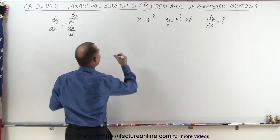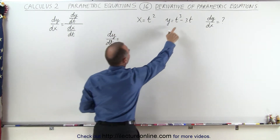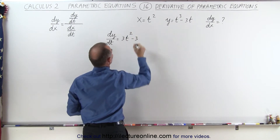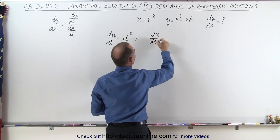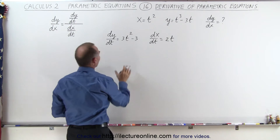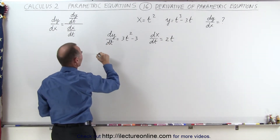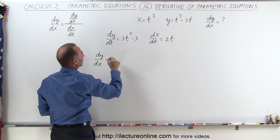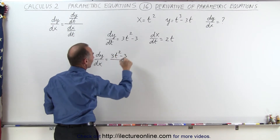Let's start with dy/dt first. dy/dt is going to be the derivative of y, which is 3t squared minus 3. Then we find dx/dt, and the derivative of x with respect to t is equal to 2t. So all we have to do is divide dy/dt by dx/dt to find dy/dx. So dy/dx is therefore equal to 3t squared minus 3 divided by 2t.